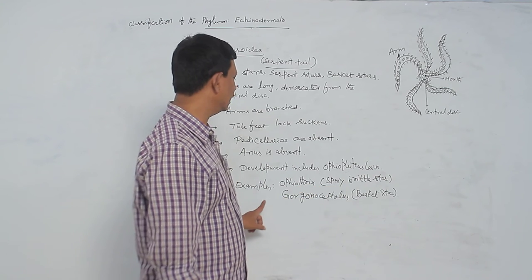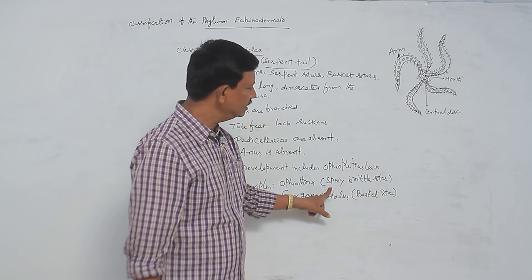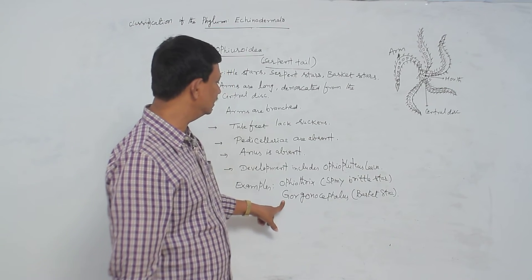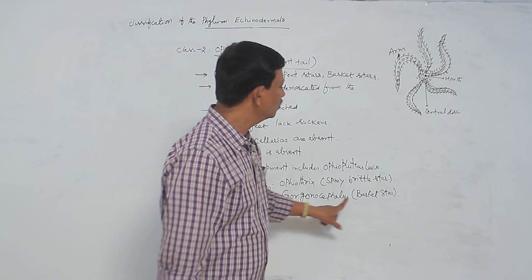The examples are Ophiothrix. This is commonly known as spiny brittle star. The another example is the Gorgonocephalus. It is commonly known as basket star.